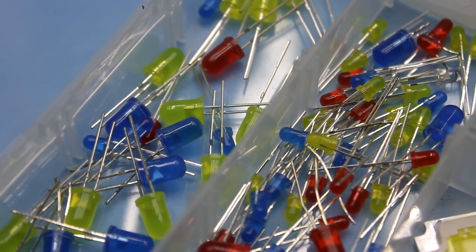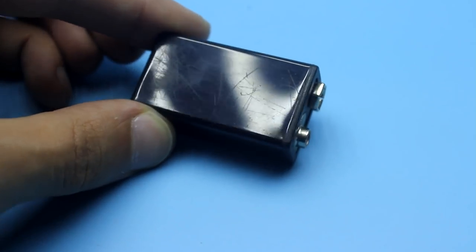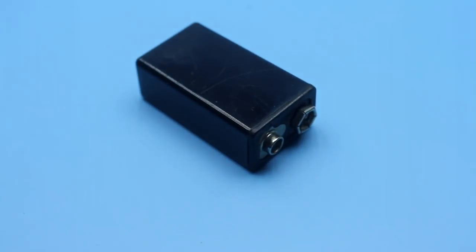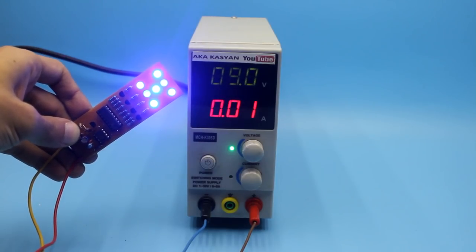LEDs can be any color, 3 to 5 mm. As a power source, it is convenient to use a standard 9V battery of the 6F22 format. During operation, the circuit consumes minimal current, so that such a battery will work for a long time.